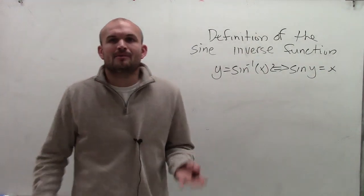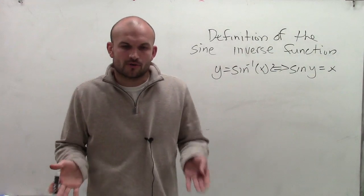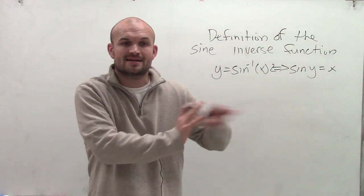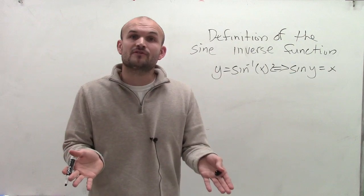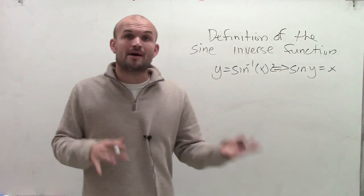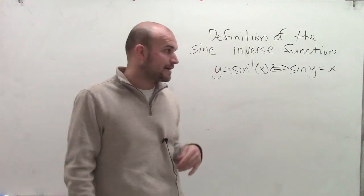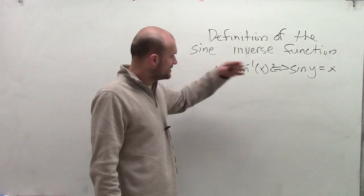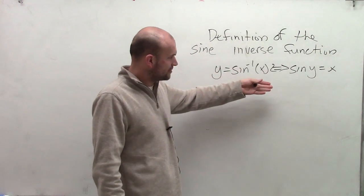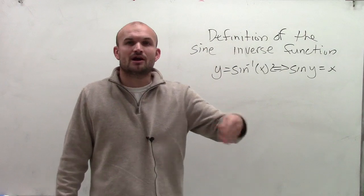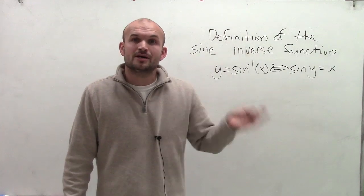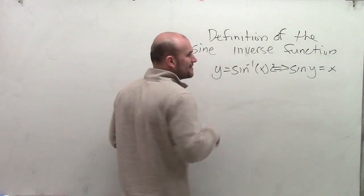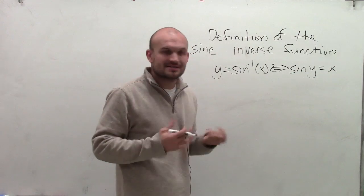When we're given a function, or even just an equation y equals something of x, to find the inverse algebraically what we do is swap the x and y's and then solve for y. Now when dealing with the sine function, that becomes a little difficult because what operation is going to undo the sine function? Well, that is what we call the inverse sine function.